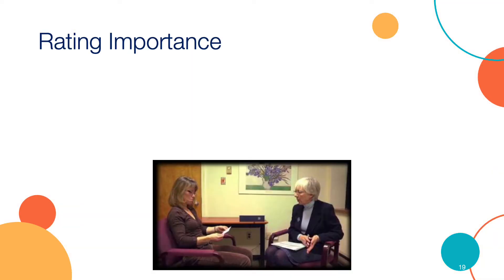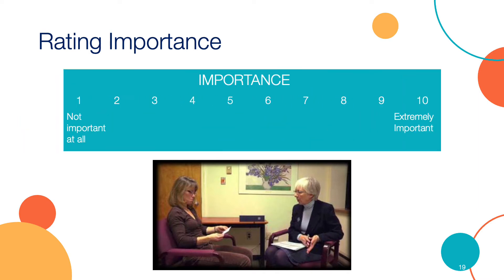Once the therapist is confident the participant has identified their occupational performance problems, Step 2 of the COPM is undertaken. The participant is asked to rate the importance of each problem using a 10-point scale, ranging from 1 — not important at all — to 10 — extremely important.